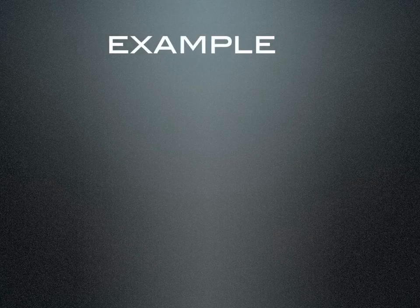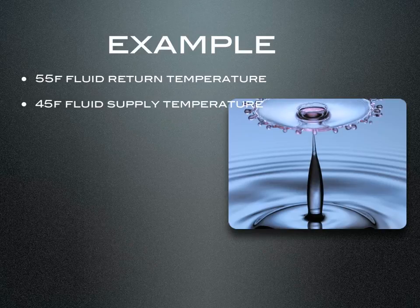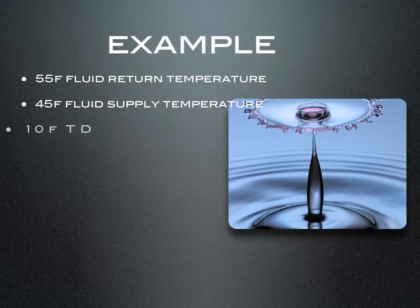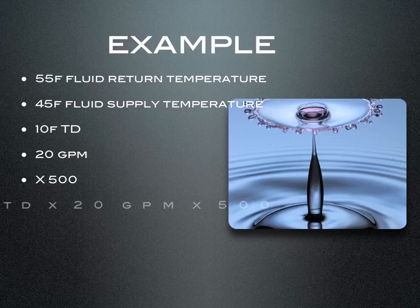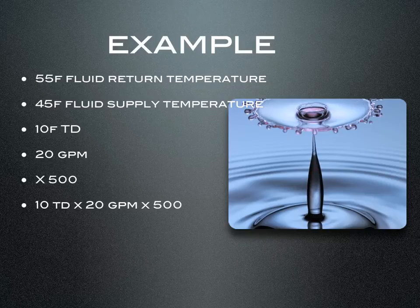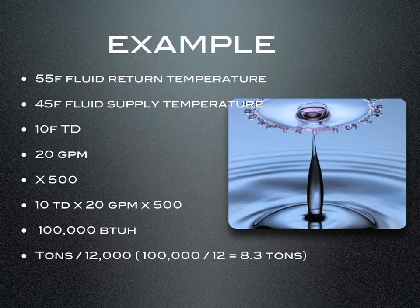Let's make sense of what I just spoke about. You'll have 55 degree fluid return temperature back to the chiller, and 45 degree fluid supply temperature back to your process. So that's going to be a 10 degree temperature difference. You have 20 gallons per minute and your constant for water. If you take those three factors — 10 temperature difference times 20 gallons per minute times 500 — you'll come up with 100,000 BTUH. If you want to convert that into tons, you would just divide that by 12.